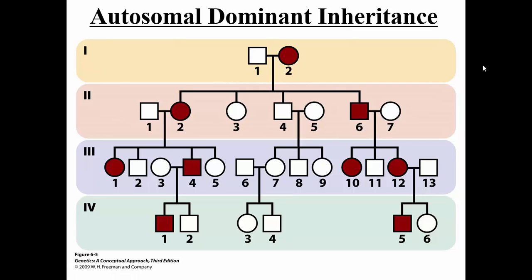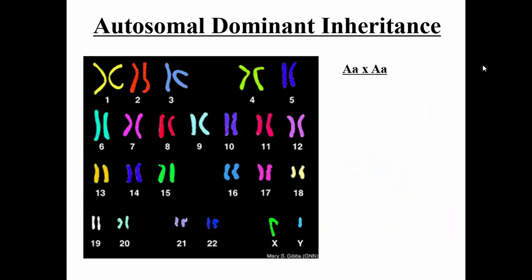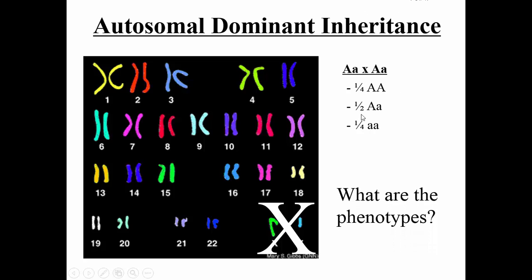That makes sense because you only need one copy of the mutant allele to express the mutant phenotype. If we do the same cross — big-A, little-a crossed with big-A, little-a — autosomal dominant is not on the sex chromosomes, so we cross those out. We get the same 1 to 2 to 1 genotypic ratio. But the question is: what are the phenotypes? With autosomal dominant, anyone having at least one big-A will be affected — so three quarters of the children are affected. The little-a, little-a group is the normal phenotype.